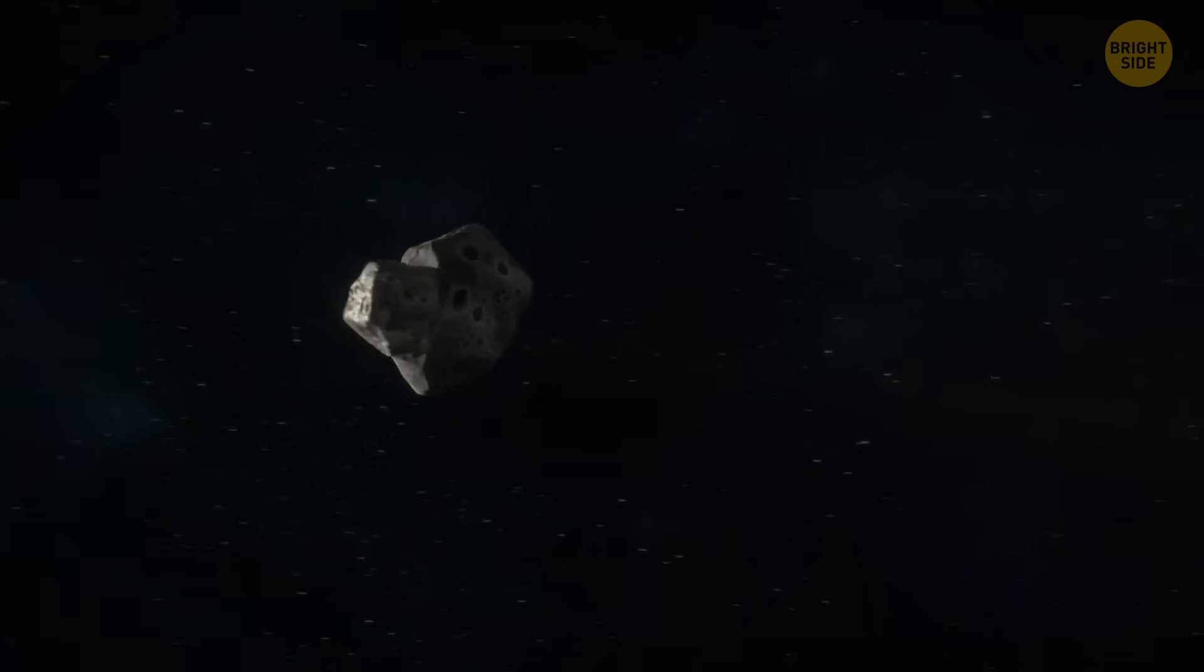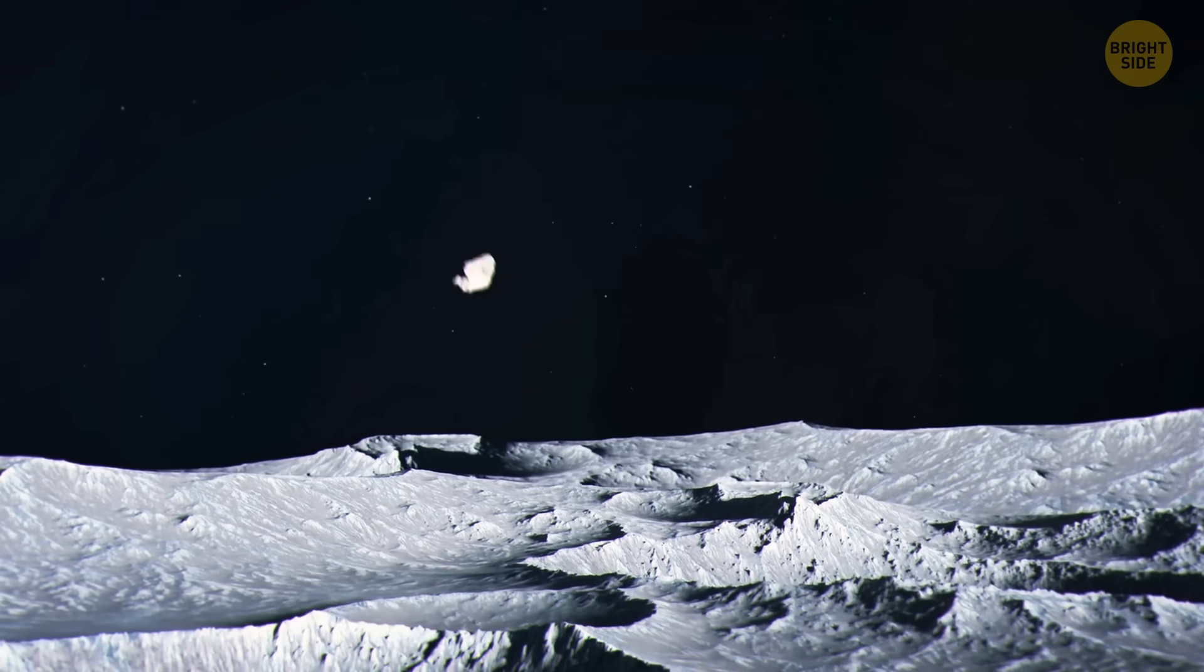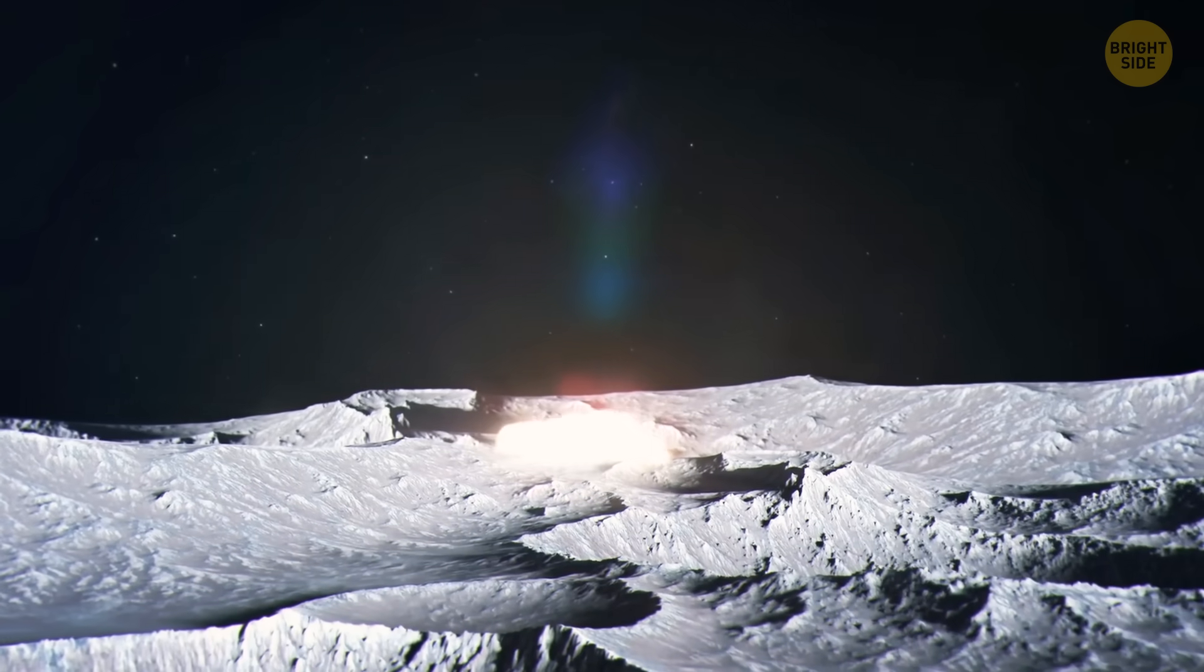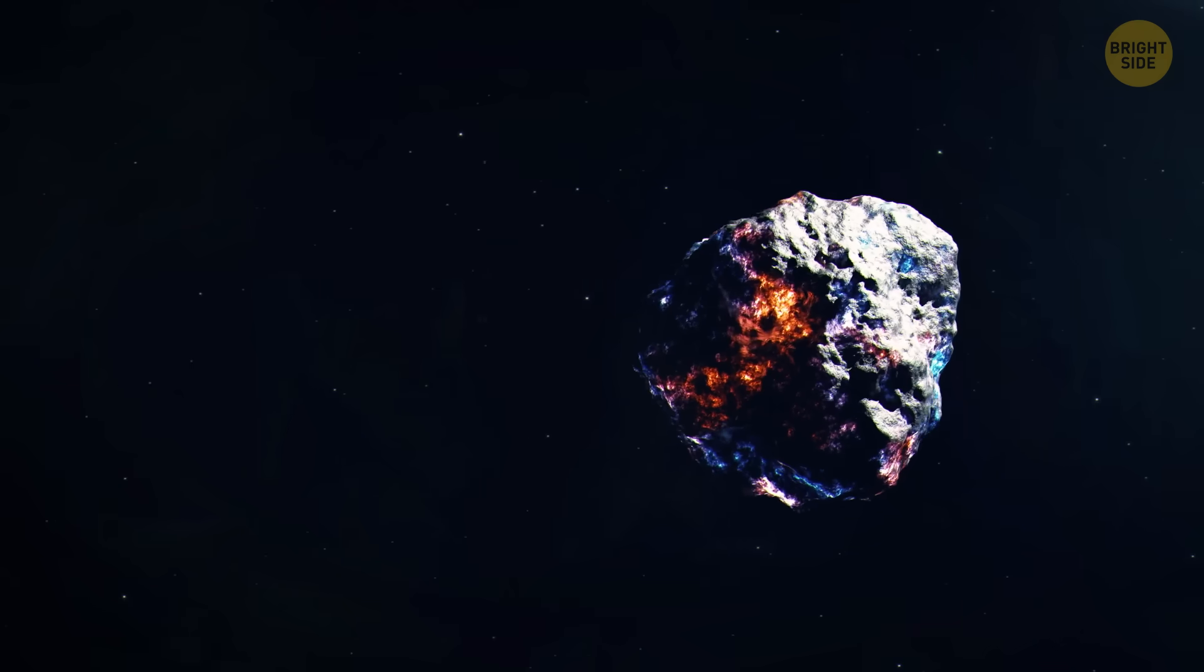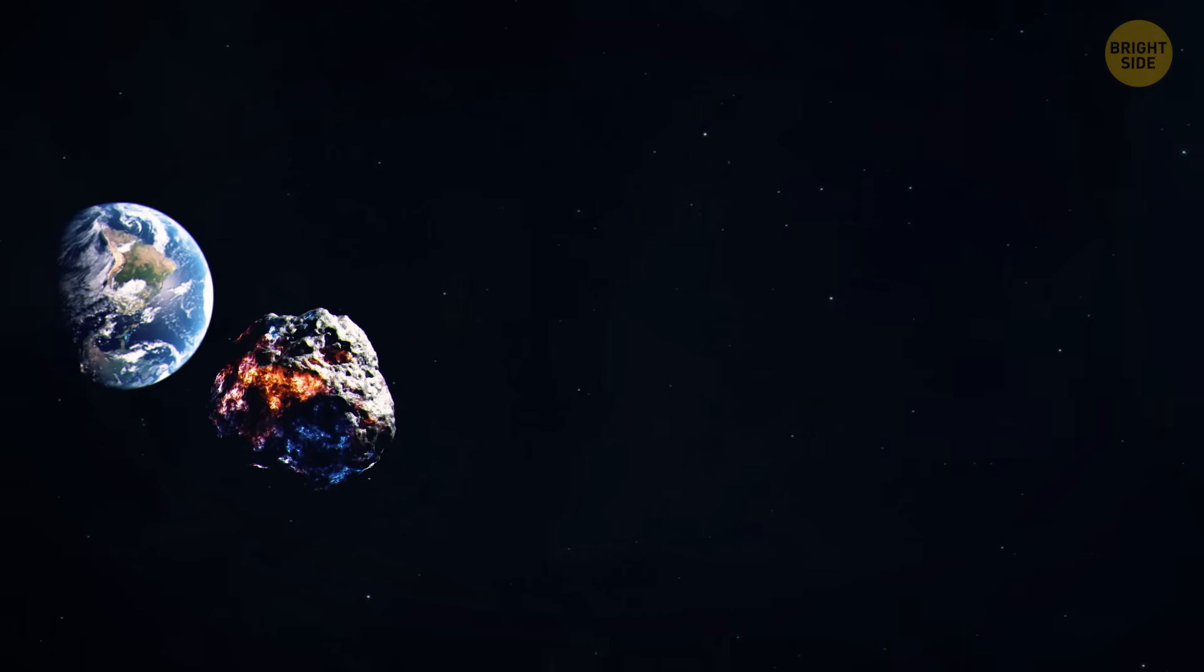Scientists think that frozen water and other substances gathered on the asteroid's surface. But then the heat from radioactive decay and many meteorites hitting the asteroid made it warm enough for the frozen water to turn into liquid. Imagine all that chemistry action happening on a space rock.